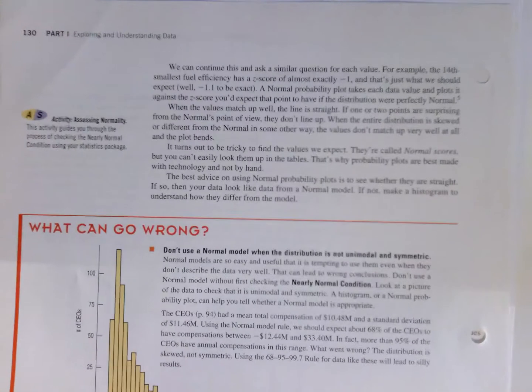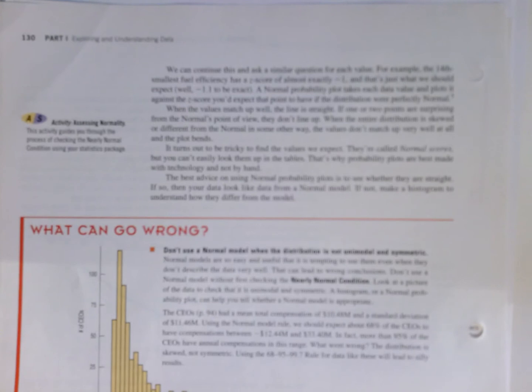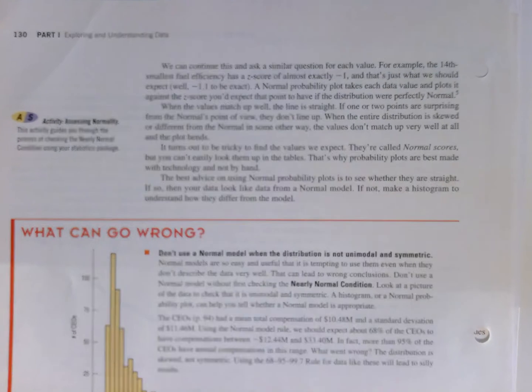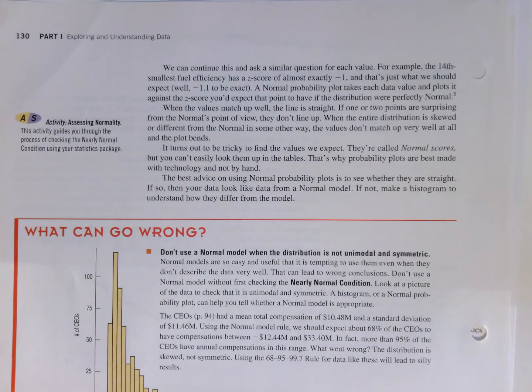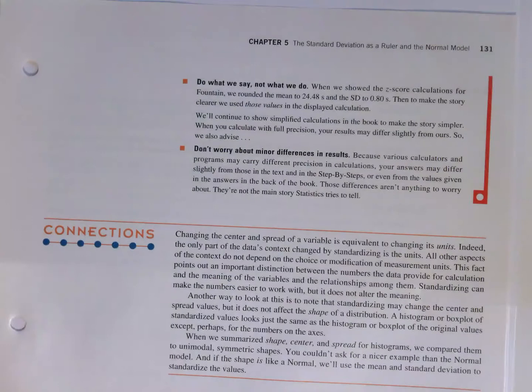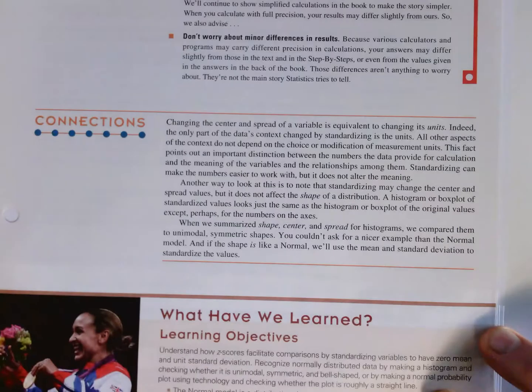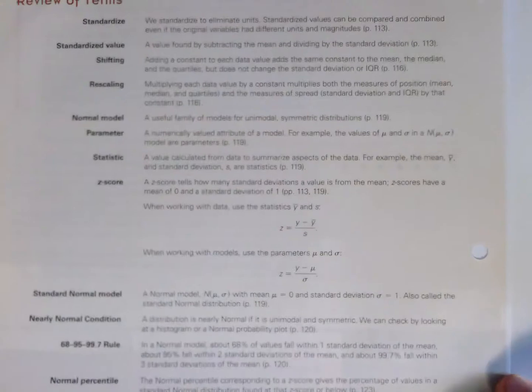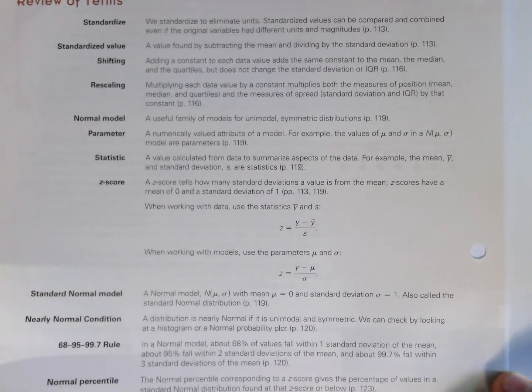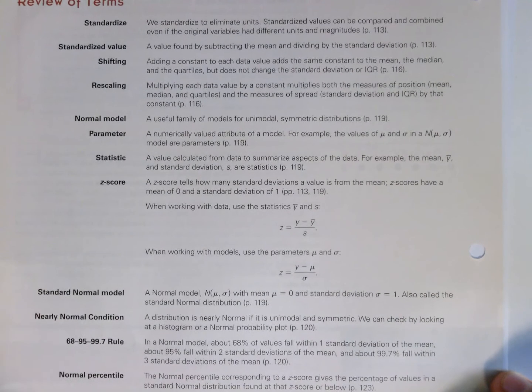As always, what can go wrong? We have to make sure we have the nearly normal condition satisfied before we proceed with things. There are some other concerns, and really the idea is the learning objectives of this chapter and those key terms. As always, be working through those as you do the reading.